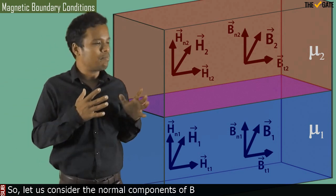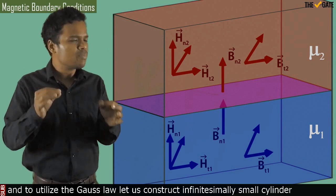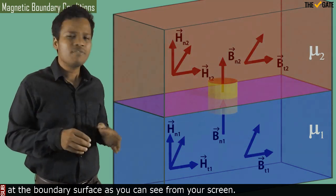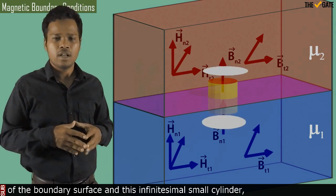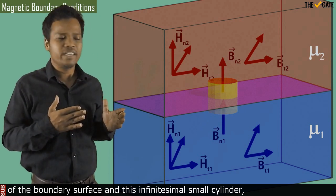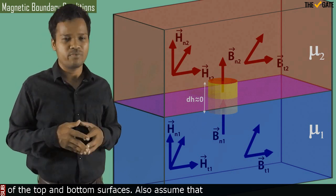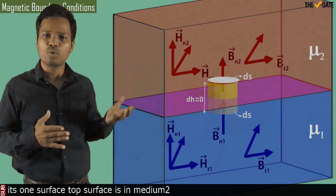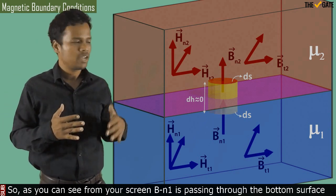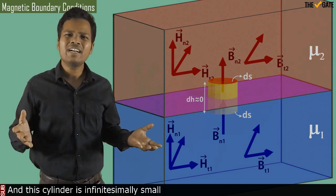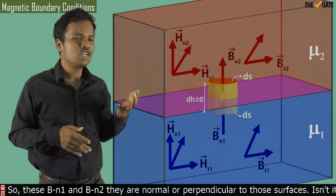Let us consider the normal components of B, that are BN1 and BN2. To utilize Gauss Law, let us construct an infinitesimally small cylinder at the boundary surface. The surfaces of the cylinder lie on both sides of the boundary surface. This infinitesimally small cylinder has negligible height and very small infinitesimal surface areas. The top surface is in medium 2 and the bottom surface is in medium 1. BN1 passes through the bottom surface and BN2 passes through the top surface.